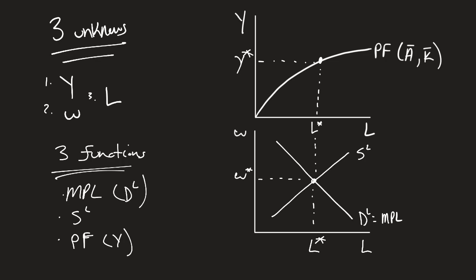So the way that you're always going to be solving these types of questions is you are going to take that MPL and that supply of labor, you're going to solve these, so you're going to get that W star and L star. You're going to take that L star, plug it into the production function so that we can get our Y star.